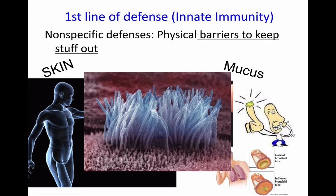Then you have cilia — tiny microscopic hairs on cells that line your respiratory tract. These cells act like little brooms or sweepers that sweep the mucus, with bacteria and viruses trapped in it, up out of your trachea and down into your esophagus where you swallow it, and the acids of your stomach can kill anything trapped in that mucus.